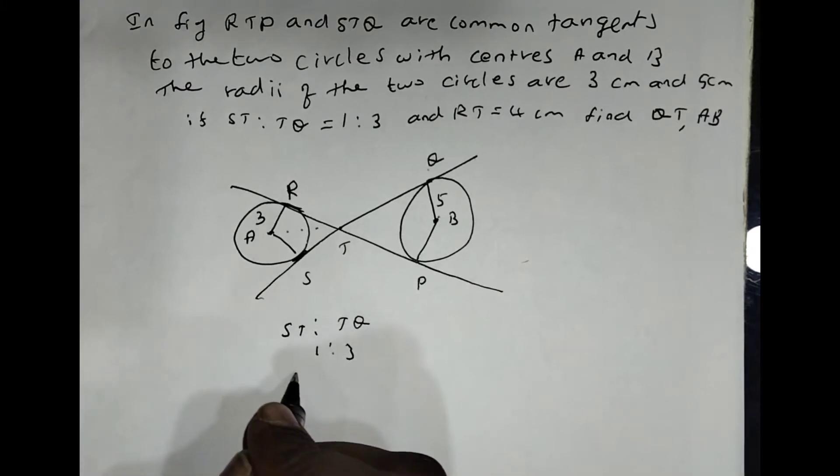So if we take X, if ST is taken as X, then TQ becomes 3X.